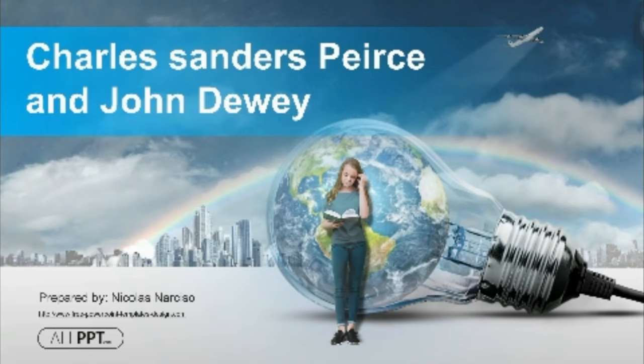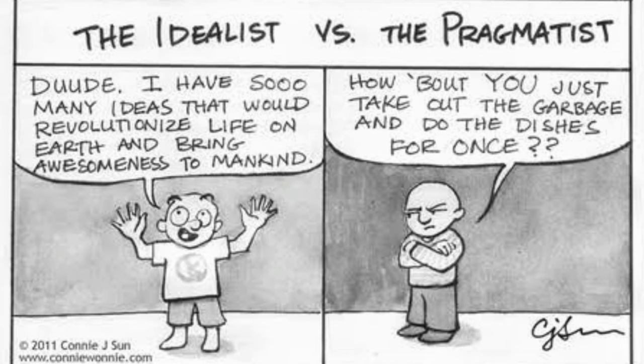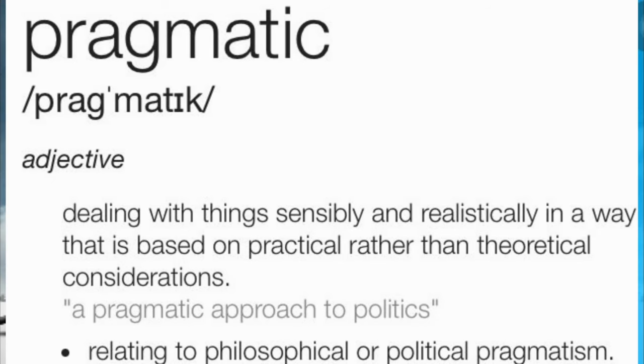We are also heading towards John Dewey's inquiry, knowledge, and instrumentalism — his ideas that are beyond empiricism and rationalism, and how he deals with truth and, most importantly, how he views knowledge. Our first philosopher is Charles Sanders Peirce, the founder of American pragmatism. Pragmatism means action gets priority over thought — dealing with things sensibly and realistically in a way based on practical rather than theoretical considerations.